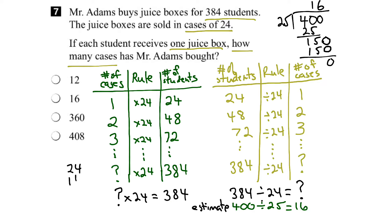24 times 16. See what happens. 6 times 4 is 24. Carry the 2. 6 times 2 is 12. Plus 2 is 144. 0. 1 times 4 is 4. 1 times 2 is 2. Add these together. 4, 8, 384.